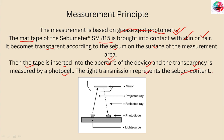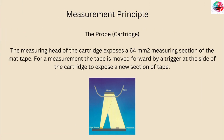There is a probe which is the measuring head of the cartridge that exposes a 64 mm square measuring section of the matte tape. For a measurement, the tape is moved forward by a trigger at the side of the cartridge to expose a new section of tape.